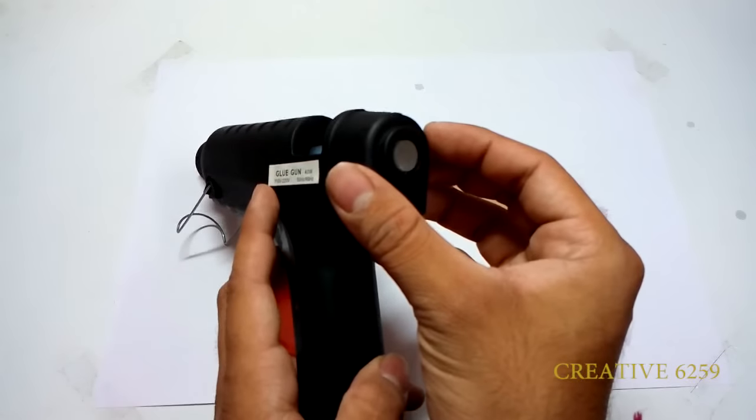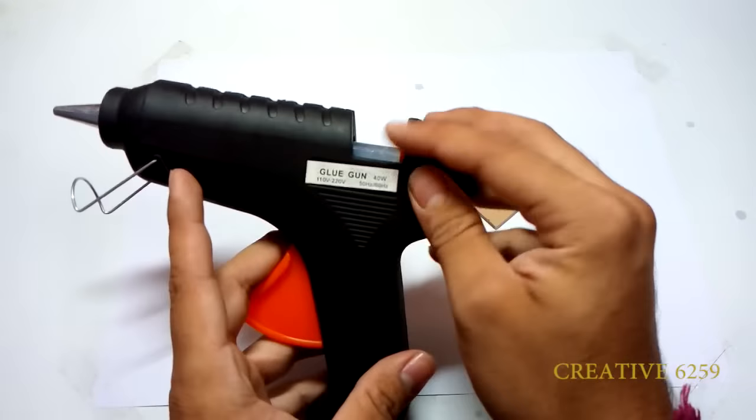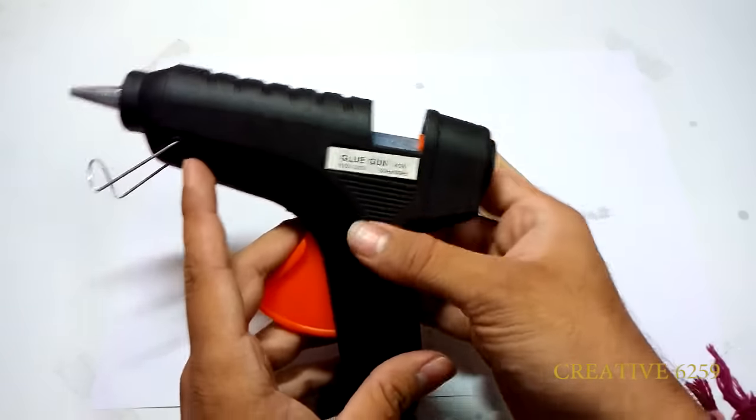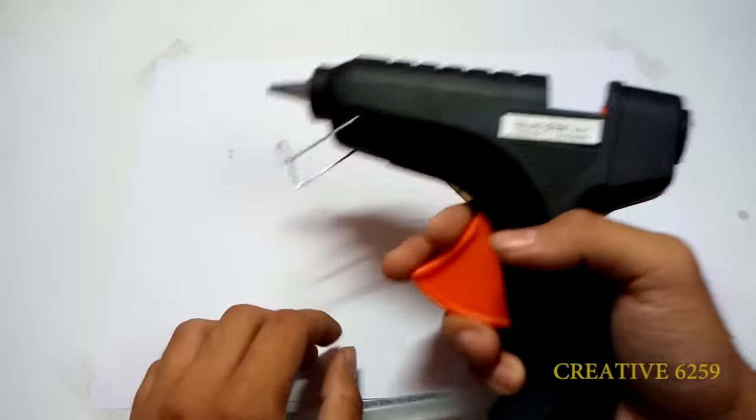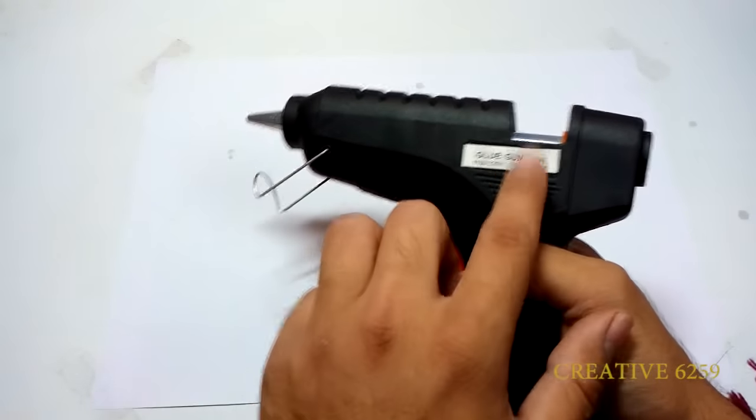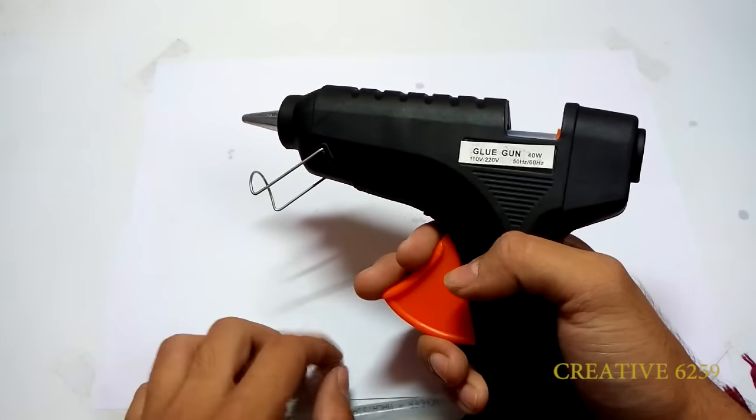Now let's put this stick inside the glue gun. Now you can see that this small glue stick is completely inside the gun and you can also see part of the glue stick over here.